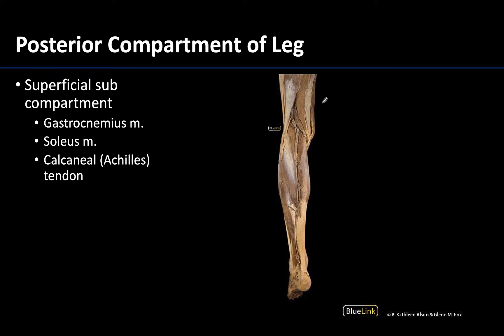The posterior compartment is the largest compartment of the leg and is composed of two sub-compartments. By far the largest is the superficial sub-compartment, composed of the two-headed gastrocnemius muscle, which is superficial, and the deeper soleus muscle. Together they form the calcaneal tendon — often referred to as the Achilles tendon — which is hard to miss and easily palpable in the posterior ankle region.